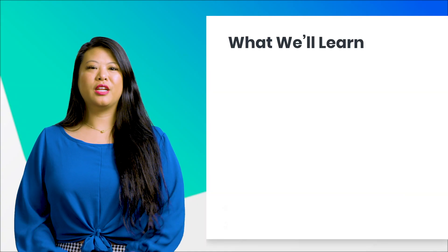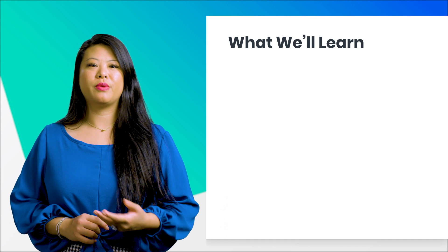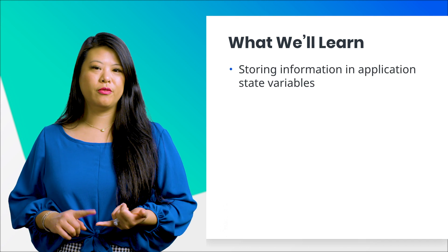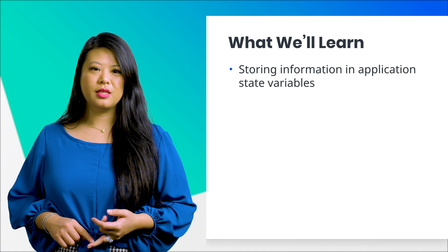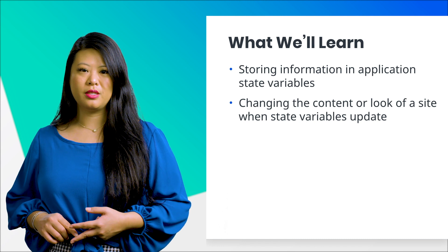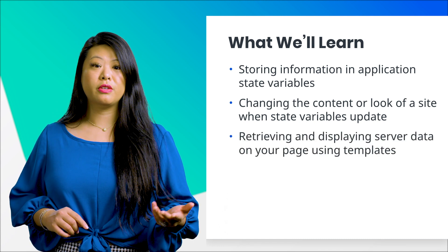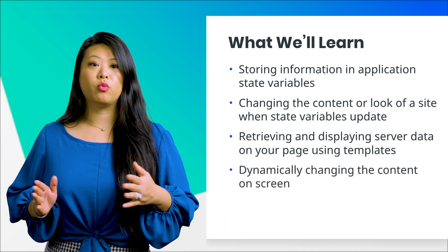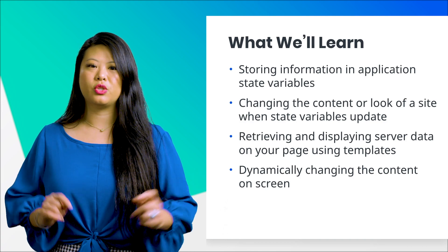Now, we'll learn how to change the appearance and content of a page depending on how users interact with it. By the end of this course, you're going to be able to sort information and application state variables in response to user interactions, change a website's content or appearance in response to that information, use templates to retrieve and display server data on your page, and retrieve information from a remote server and display some of its data as on-screen content.